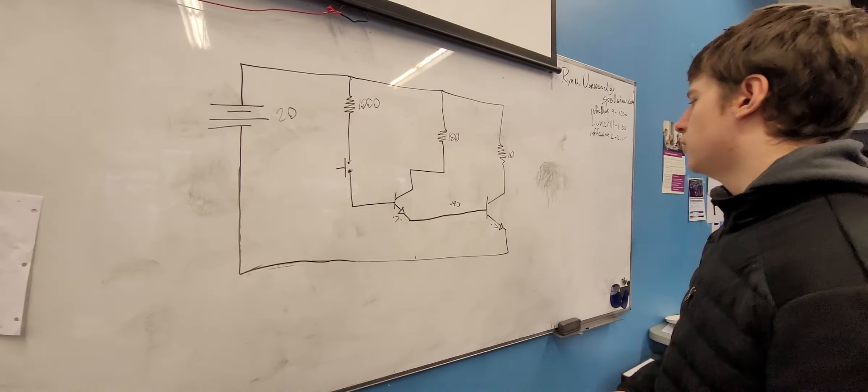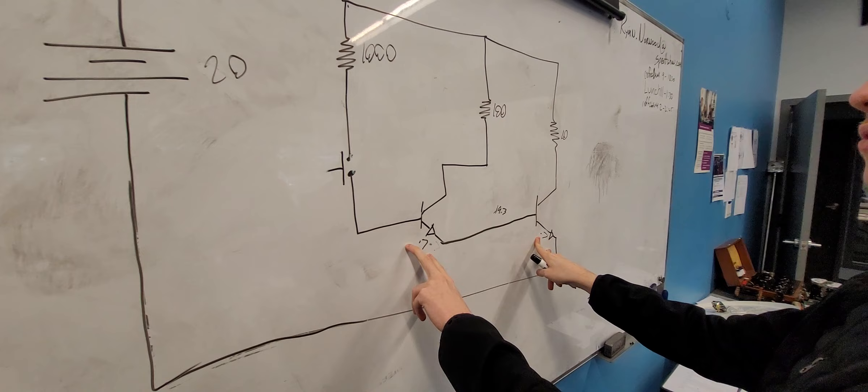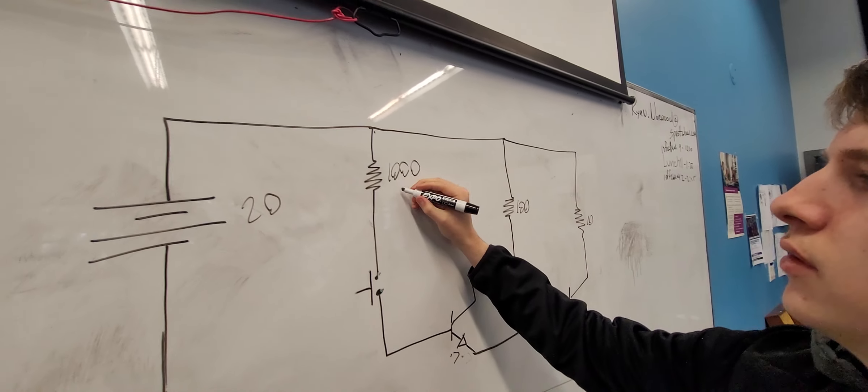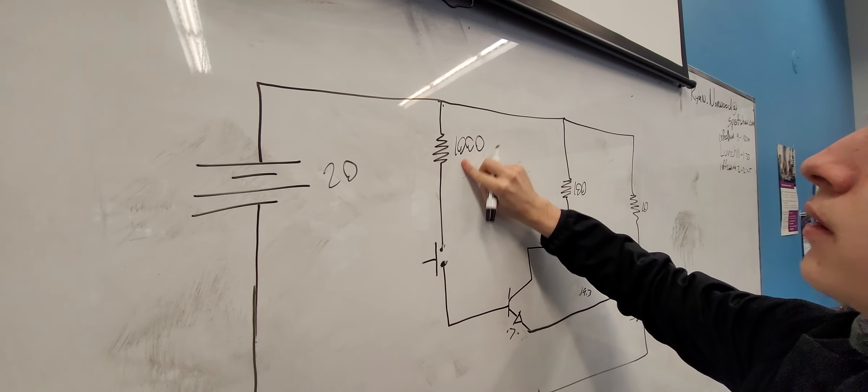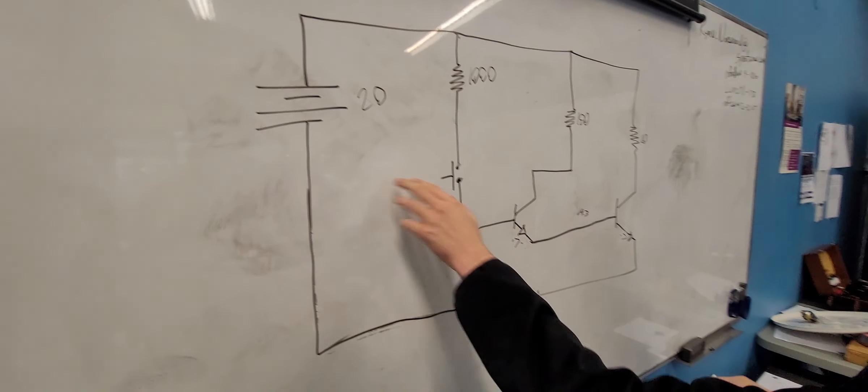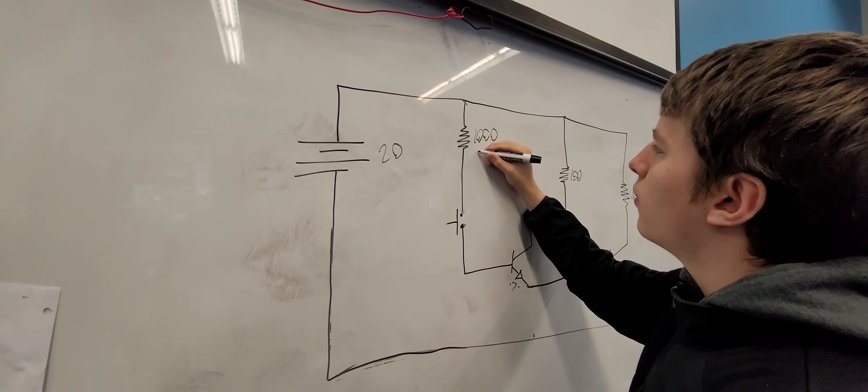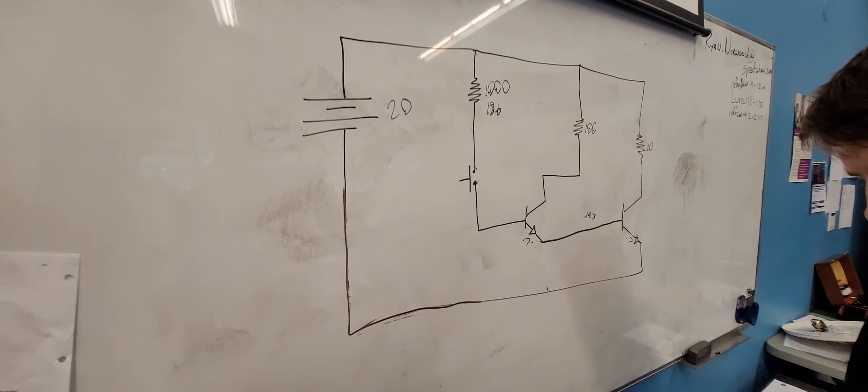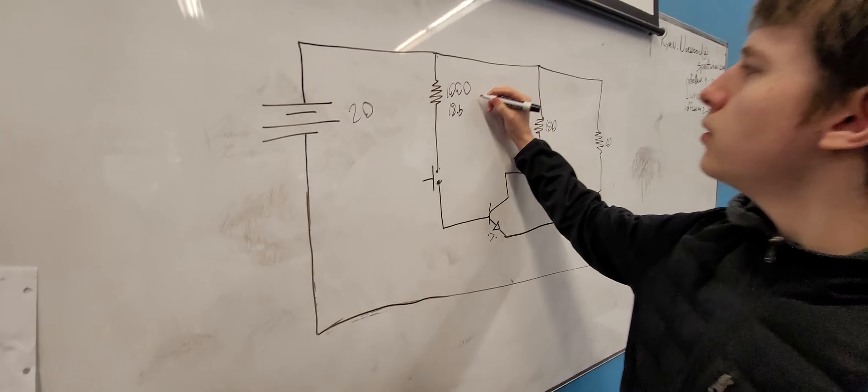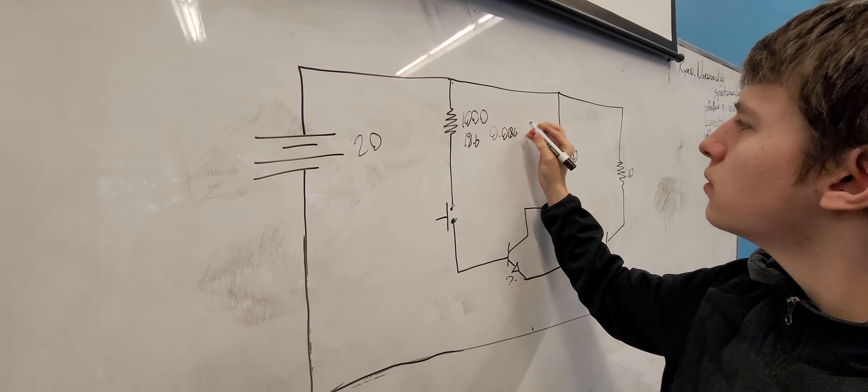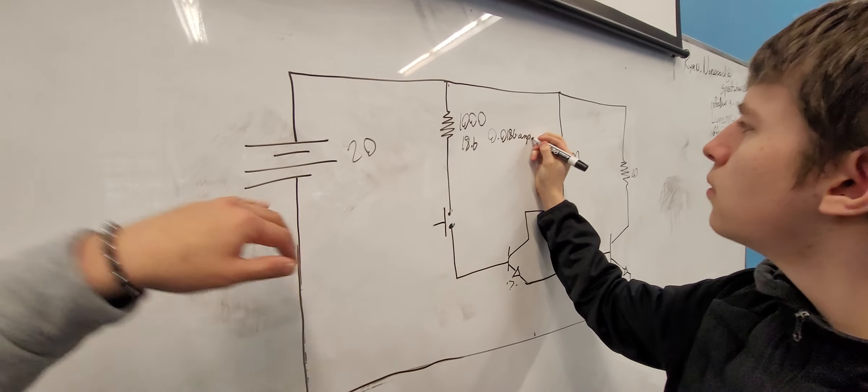So we have 0.7 volt drop. Moving through this line in series, we have 0.7 volt drop and 0.7 volt drop. So the voltage here is going to be 18.6 volts because the source voltage is 20. 20 minus 0.7 minus 0.7. So we have here 18.6 volts. We can then divide that by 1,000. So let me just break this down a second.